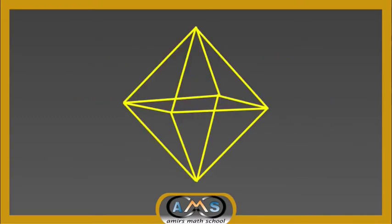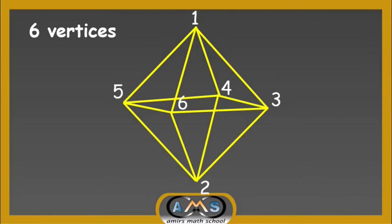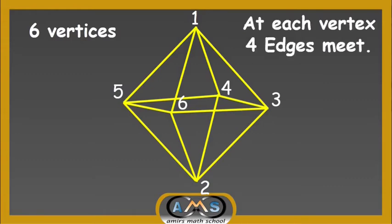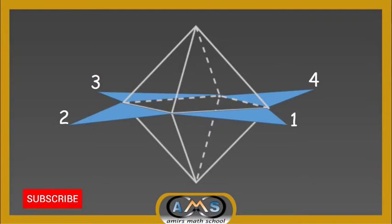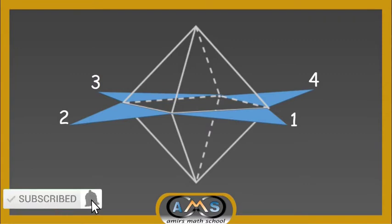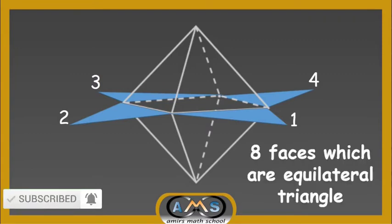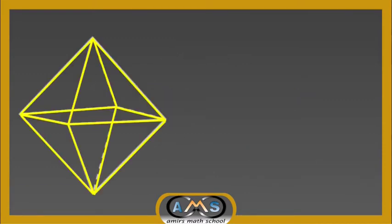In a regular octahedron, there are a total of 6 vertices, and at each vertex, 4 edges meet. That is, the vertices are the meeting points of 4 edges. If we look separately, the upper portion consists of 4 triangular faces, and similarly the lower portion. So in a regular octahedron, there are 8 faces, which are all equilateral triangles.